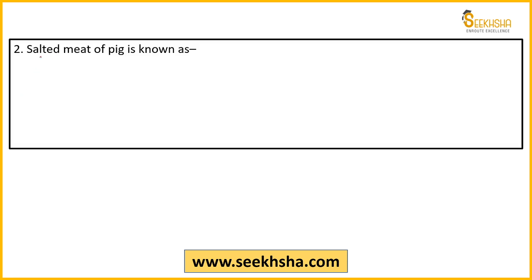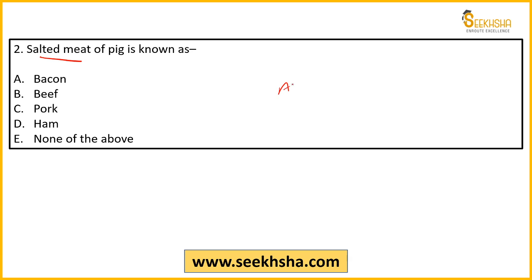Next, question number two: Salted meat of pig is called what? Option A: bacon, B: beef, C: pork, D: ham, E: none of the above. Whether you are giving NABARD, IBPS AFO, or any agriculture paper, even if you are not an agriculture graduate, if you are a serious candidate you should know this simple question.